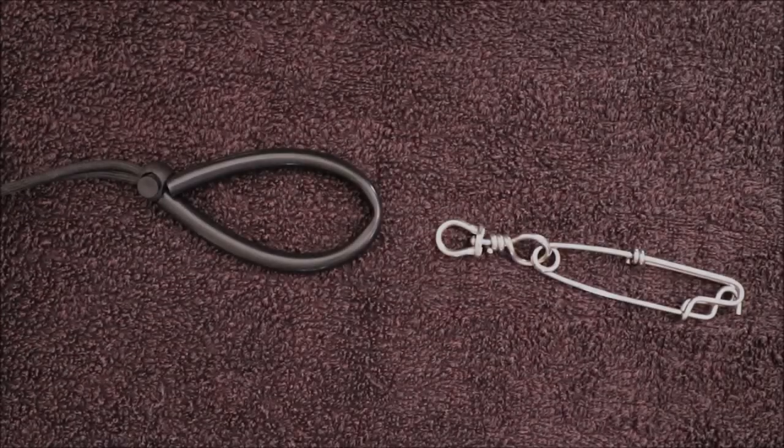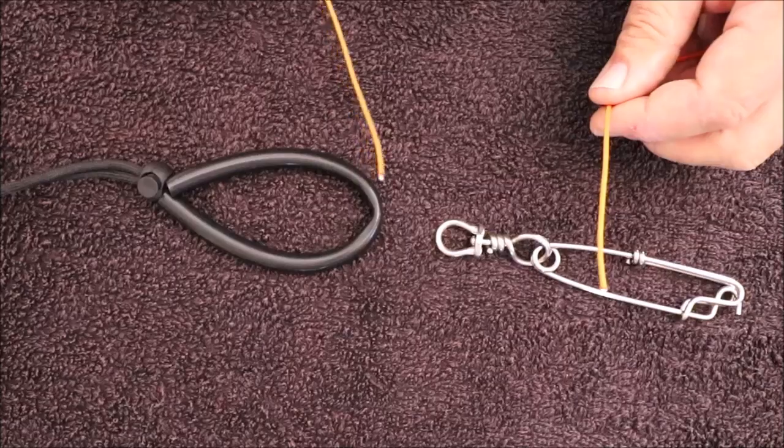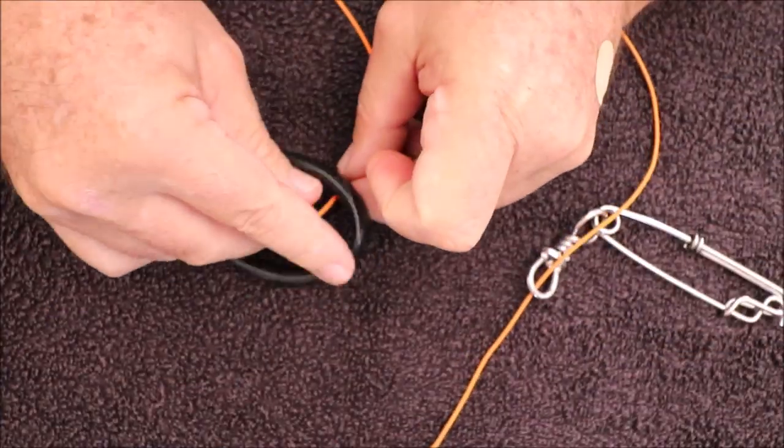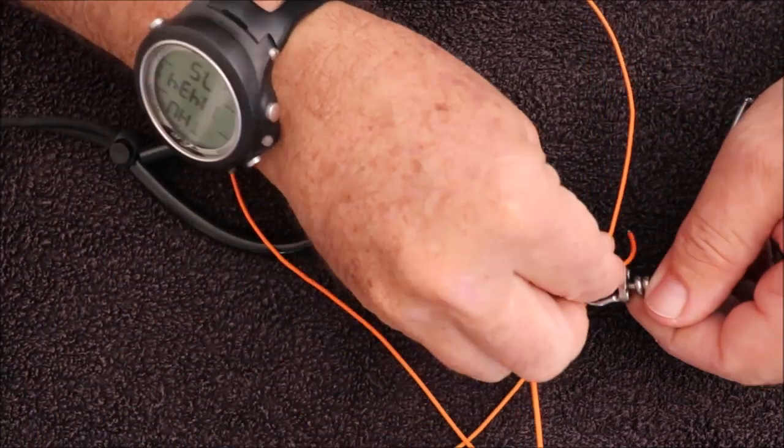To set this knot up, pass the dyneema cord through the two components you need to join.